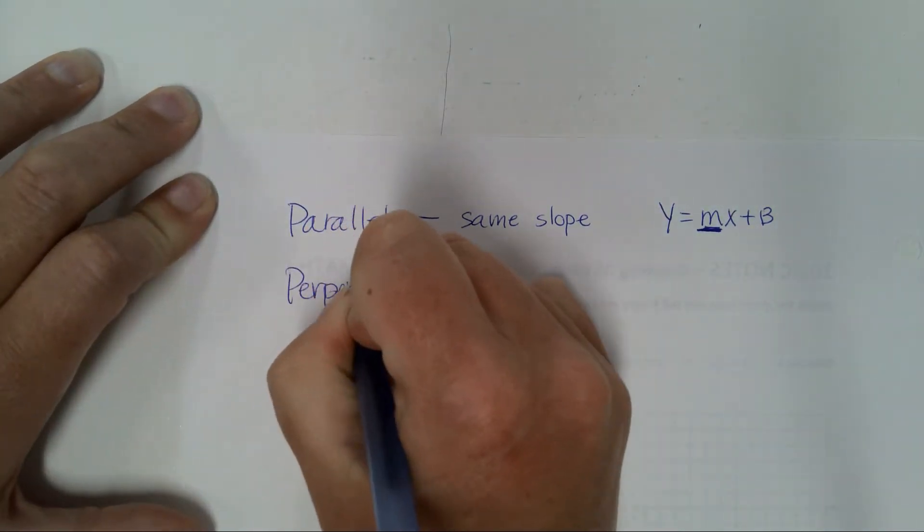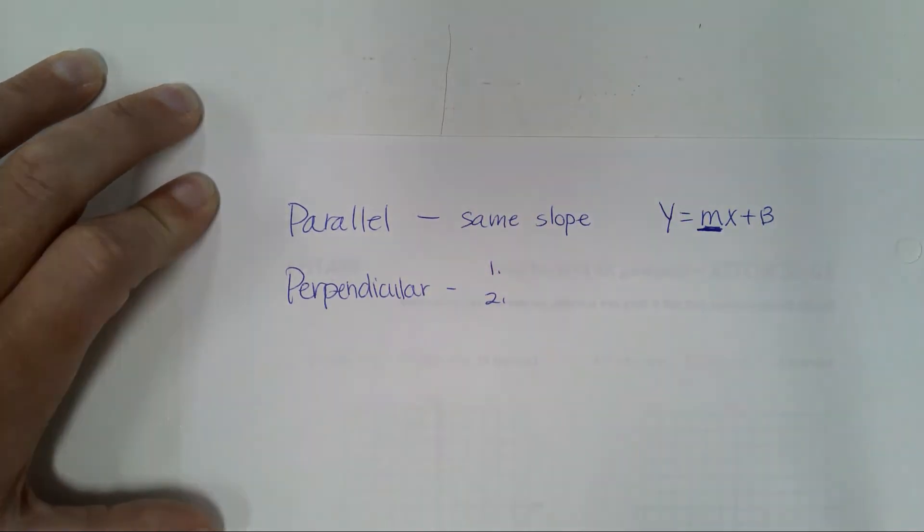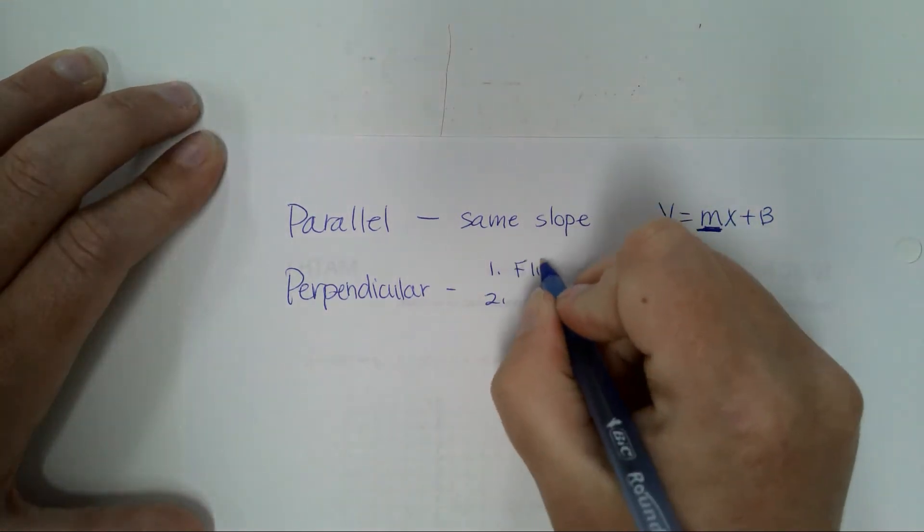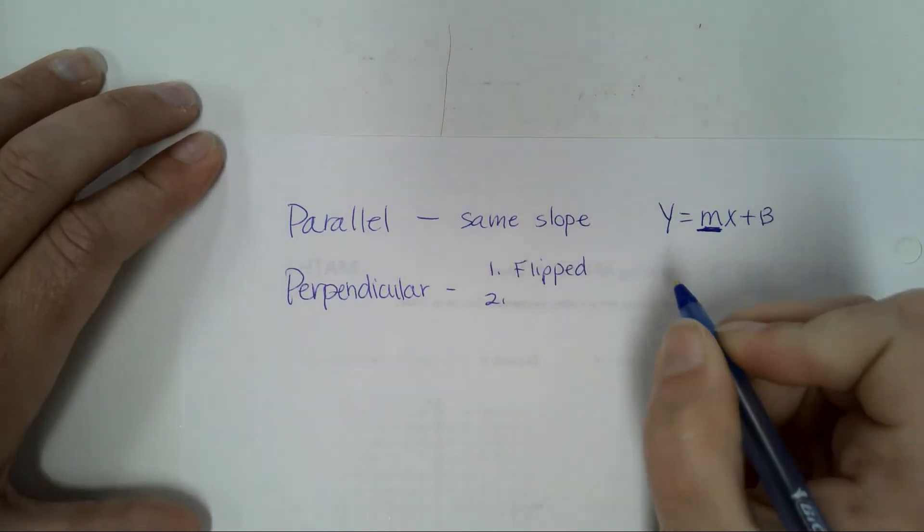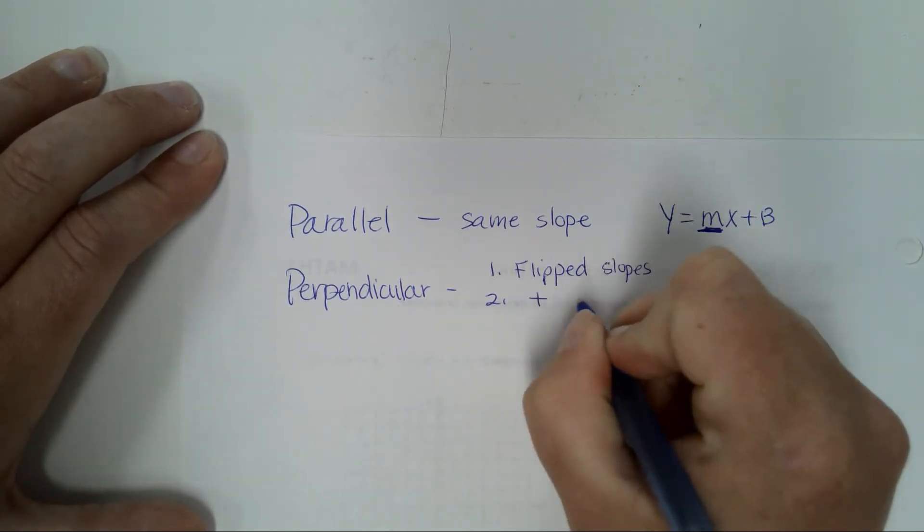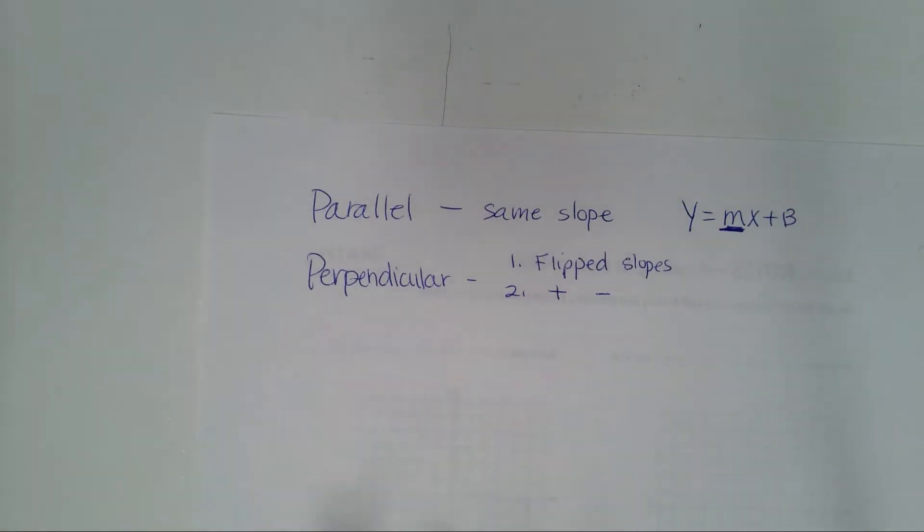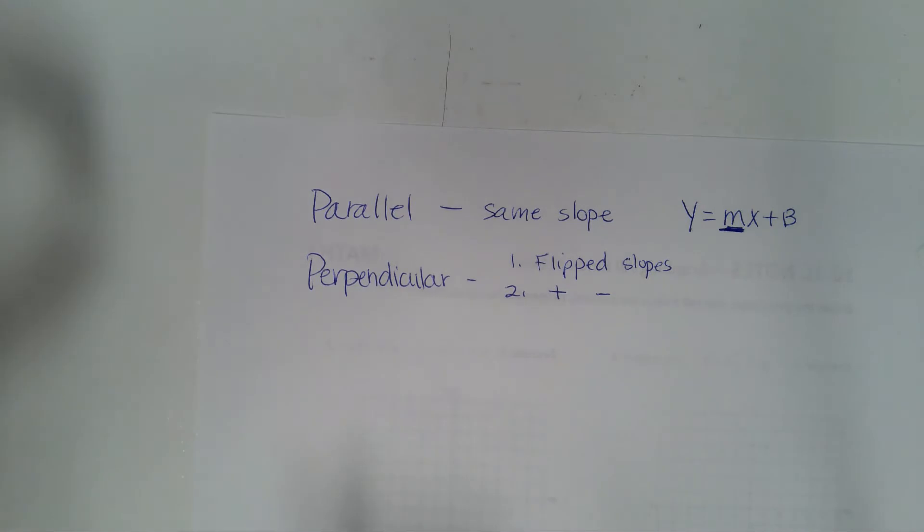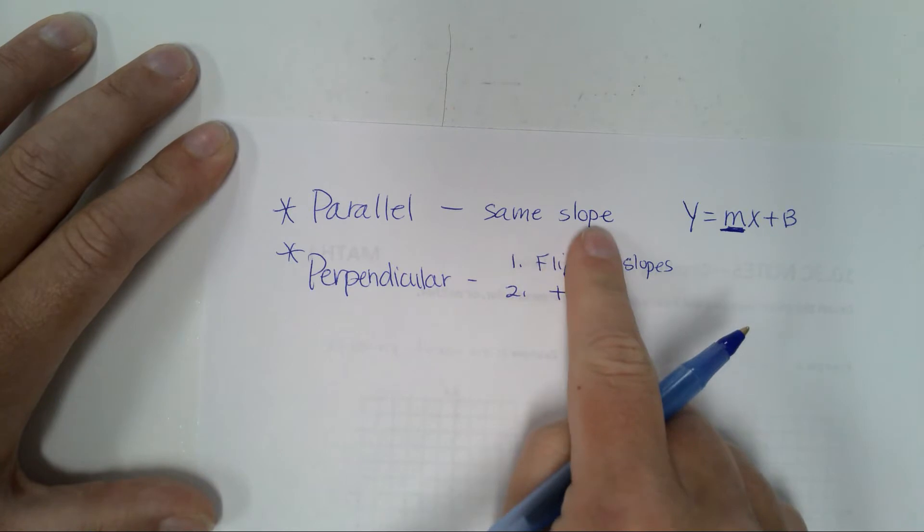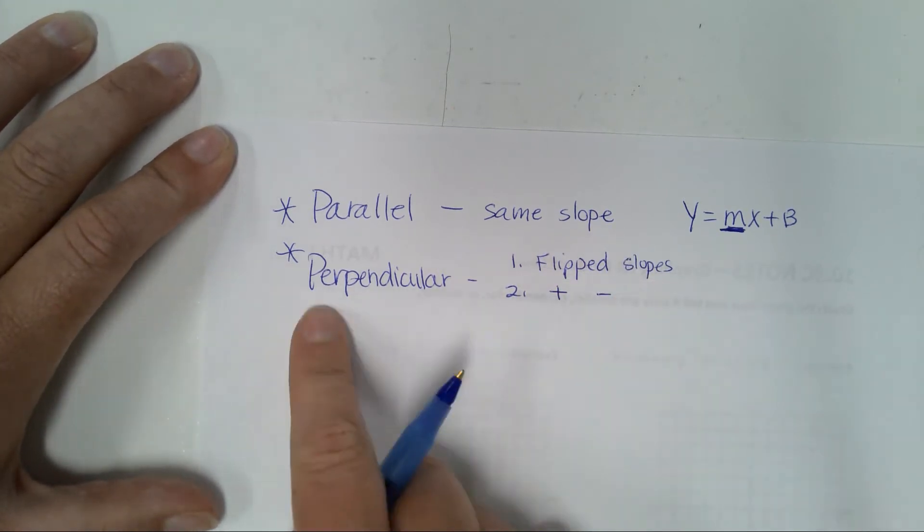Perpendicular lines, two things. I know it's been a little bit since we talked about it, it was last week, but two things. One thing is that the slopes are flipped. What else? One must be positive, one must be negative. Very good. So don't forget that. If you cannot tell based on your graph, you always have these two things right here. Same slope, they must be parallel. Or if their slopes are flipped and one's positive and one's negative, they must be perpendicular. Must be.